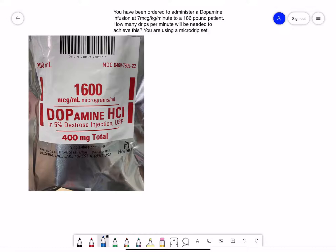So the question reads: you have been ordered to administer a dopamine infusion at 7 micrograms per kilogram per minute to a 186 pound patient. How many drips per minute will be needed to achieve this?